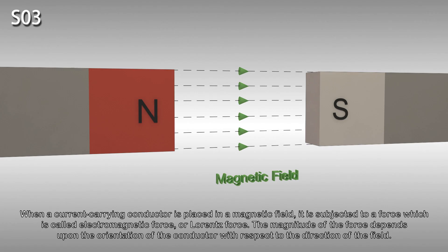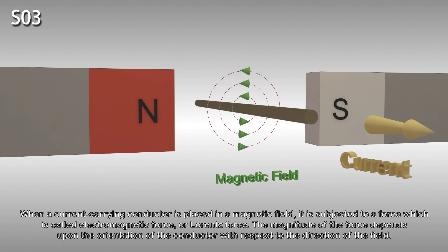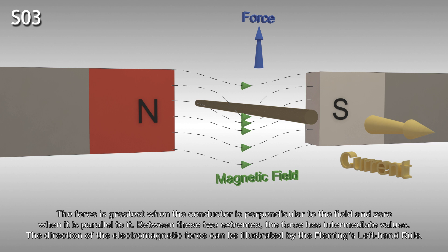When a current carrying conductor is placed in a magnetic field, it is subjected to a force called the electromagnetic force or Lorentz force. The magnitude of the force depends upon the orientation of the conductor with respect to the direction of the field. The force is greatest when the conductor is perpendicular to the field and zero when it is parallel to it. Between these two extremes, the force has intermediate values.